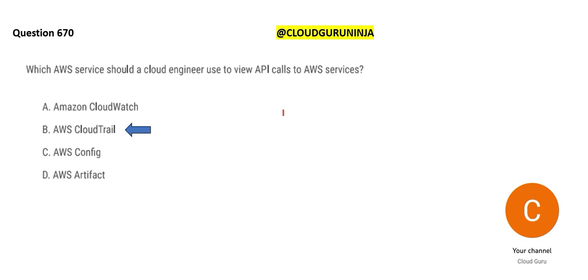CloudTrail has logs of all user activities and API calls. In real life, you make API calls to third-party applications — for example, for currency exchange rates, you call a third-party API rather than building it in-house. CloudTrail will log all of those calls. It also logs both directions: if somebody accesses your system through APIs, that is logged too.